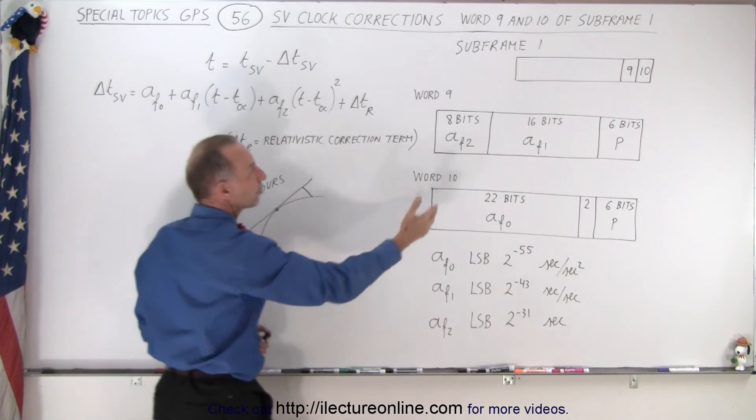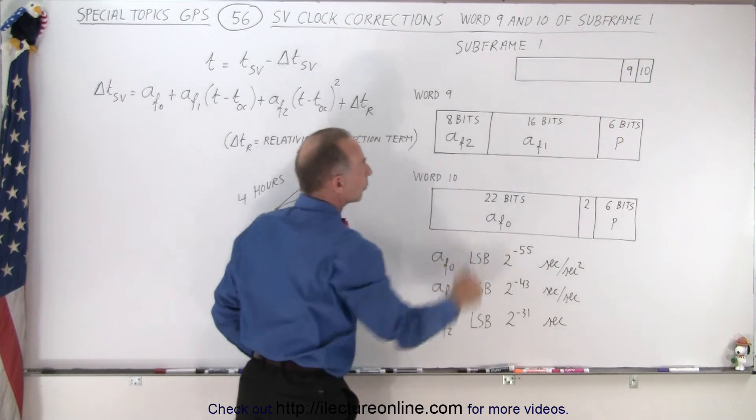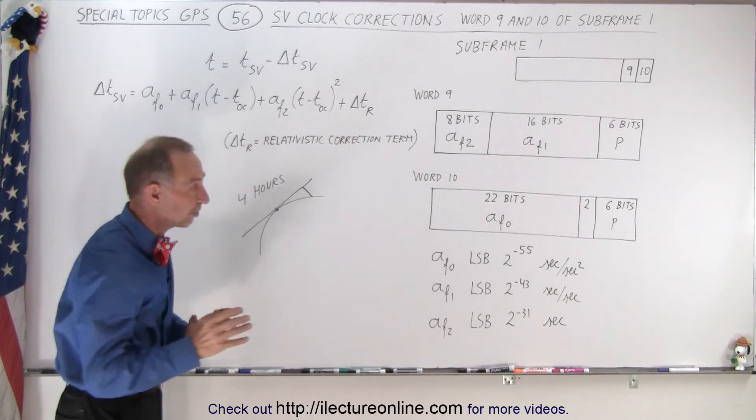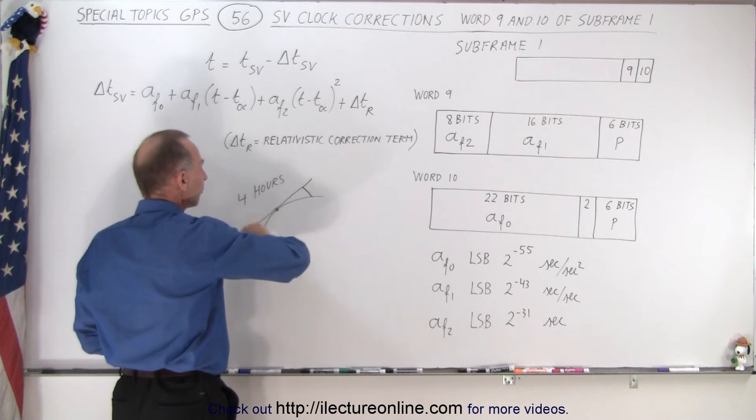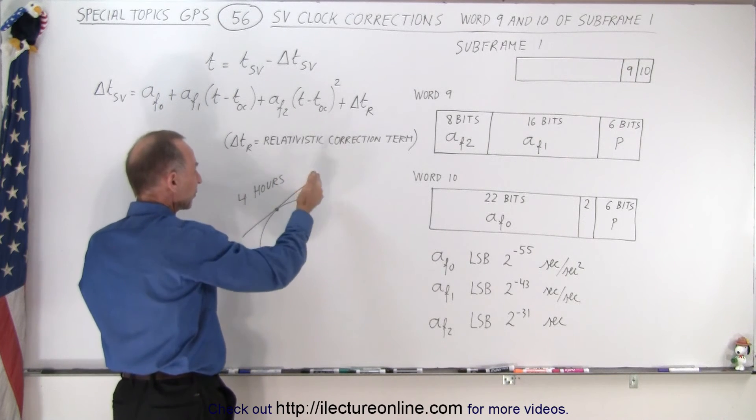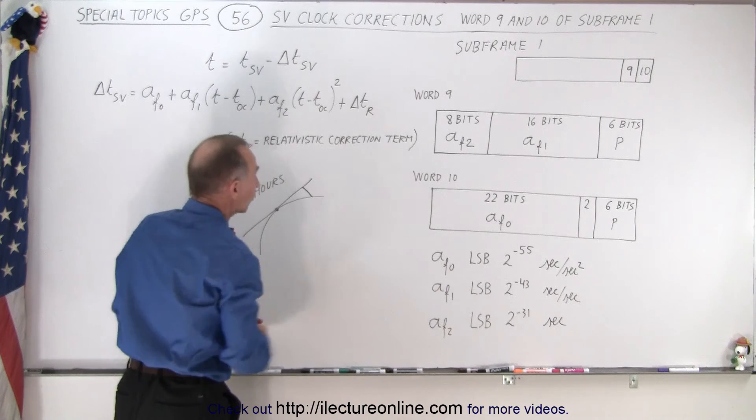And the coefficient of the term to the second power is AF2 and those are then contained within word 9 and word 10. Those are then of course necessary because those will then determine how much your error will be from the ephemeris data that would be perfect for the ephemeris data that it actually is.